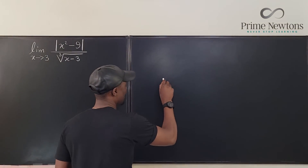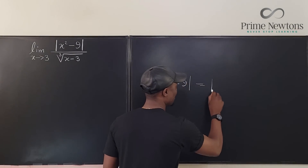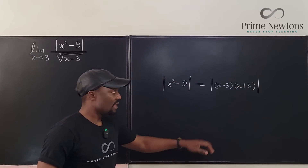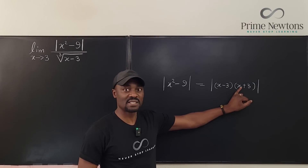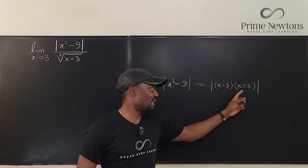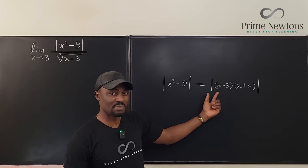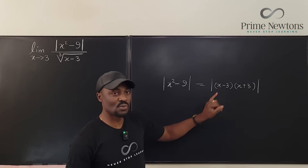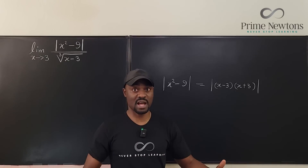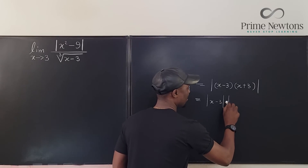The absolute value of x² - 9 is the same thing as the absolute value of (x-3)(x+3). It doesn't matter whether x is positive or negative; the relative position to 3 does not matter because addition allows commutation of numbers but subtraction does not. Using the property that the absolute value of a product is the product of the absolute values, this becomes |x-3| times |x+3|.